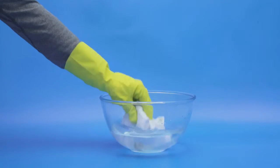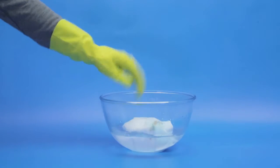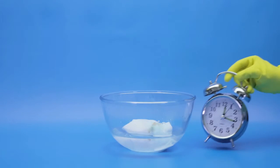Soak the garment in cold water for 15 minutes and gently rub at the stain every three to five minutes or so.